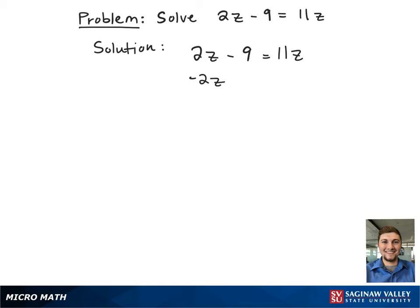We're going to subtract 2z from both sides, so that way we can cancel out the left-hand side and get z's by themselves. This gives negative 9 equals 9z.